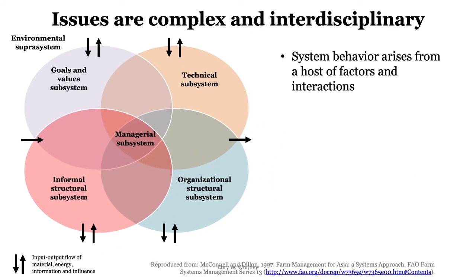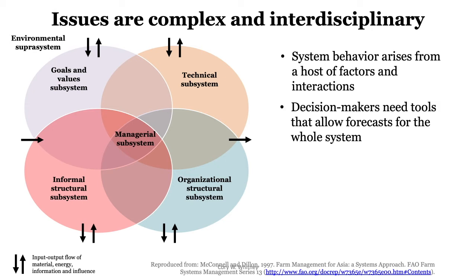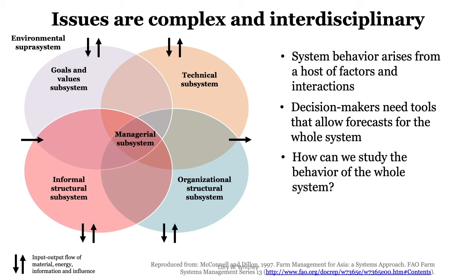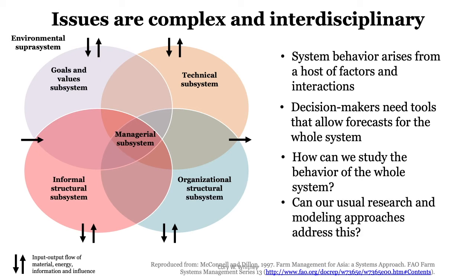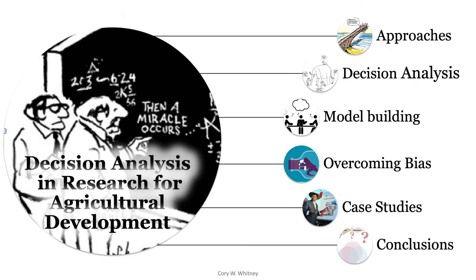Systems are very complex. The behavior of the system actually arises from a number of factors and interactions. In order to make decisions about how to influence these systems, we need tools that really look at the whole system and how it functions. But how can we study the behavior of a whole system? Can our usual research approaches address this? Maybe not. If we just go and measure the soil or only measure some minuscule factor of the whole complex system, will we really understand what effects decisions will have on the farm?